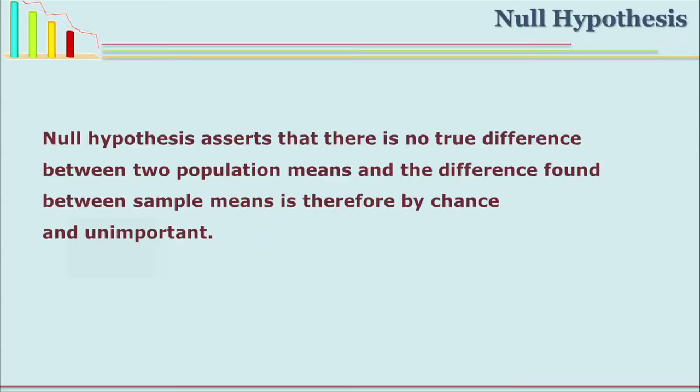If the research hypothesis says the difference between pre and post is positive and significant, the null hypothesis will say there is no true difference in pre and post test scores. Null hypothesis will also say there is no true difference in the scores of control group and experimental group. This is called null hypothesis and it is denoted by H0.